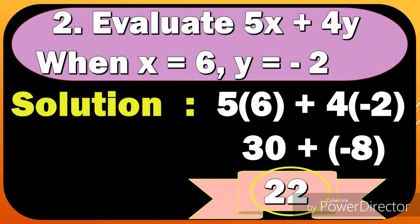Number 2 example is to evaluate 5x plus 4y when x is equal to 6 and y equals negative 2. Again, we're going to substitute the value of x and y. We have 5x is 6, so we have 5 times 6 plus 4y.